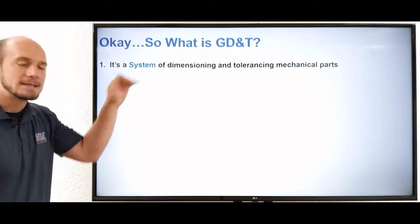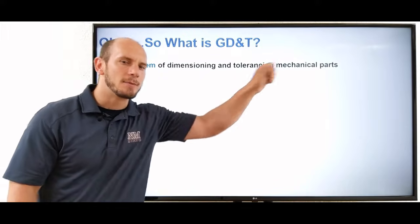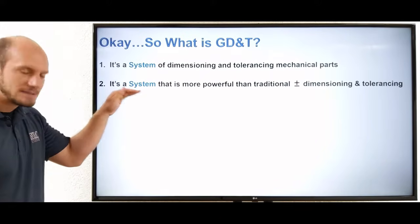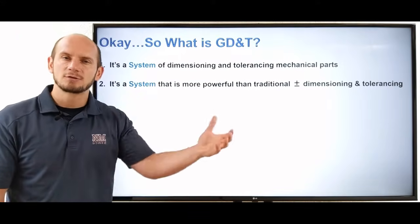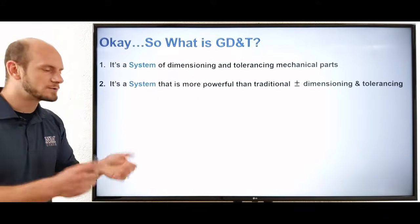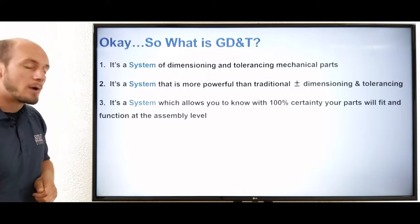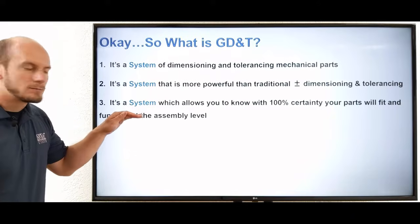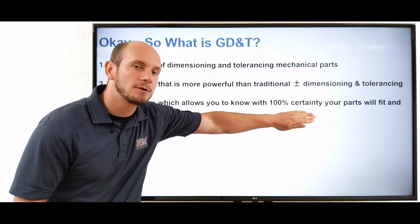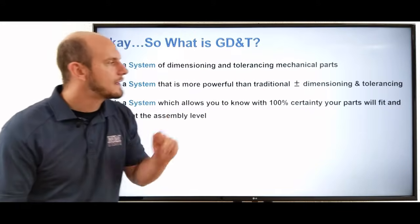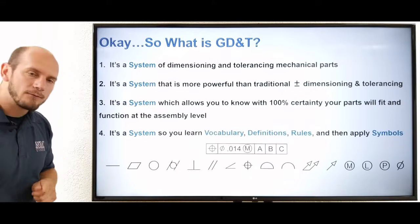Well, number one, it's a system, and it's a system of dimensioning and tolerancing mechanical parts. Number two, it's a system that's more powerful than that traditional dimensioning and tolerancing that we're all used to seeing and using on our drawings. How is it more powerful? Well, it's more powerful because it's a system which allows you to know with 100% certainty, 100% certainty that your parts will fit and function at the assembly level.